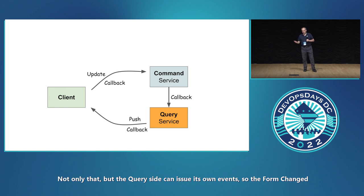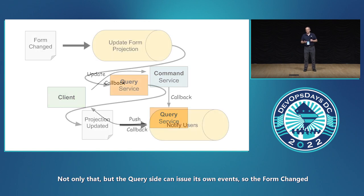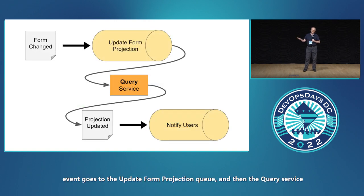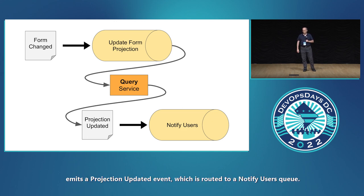Not only that, but the query side can issue its own events. So the form change event goes to the update form projection queue, and then the query service emits a projection updated event, which is routed to a notify users queue.